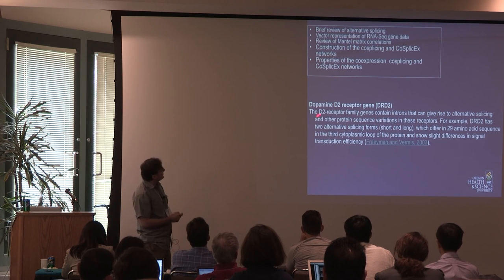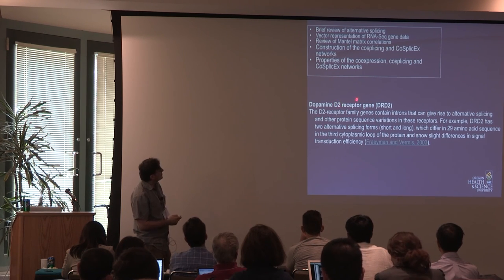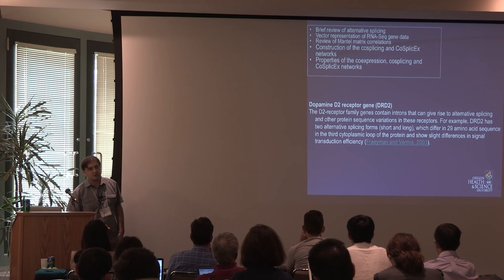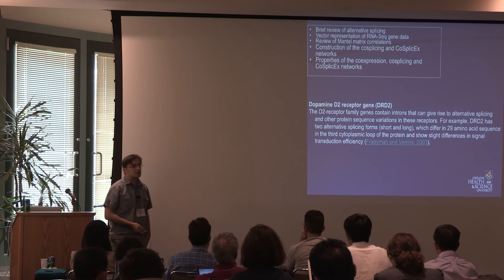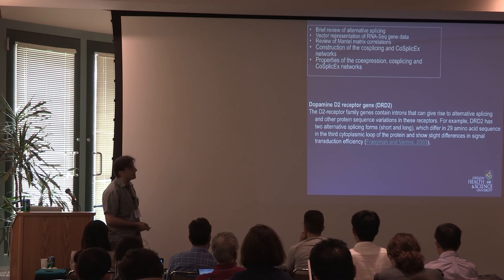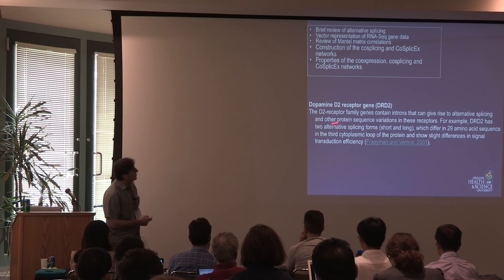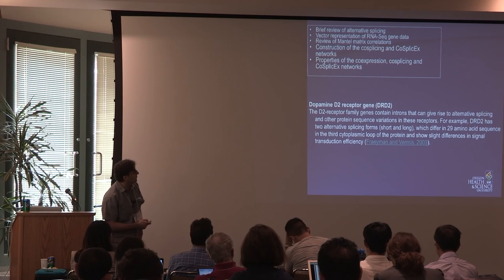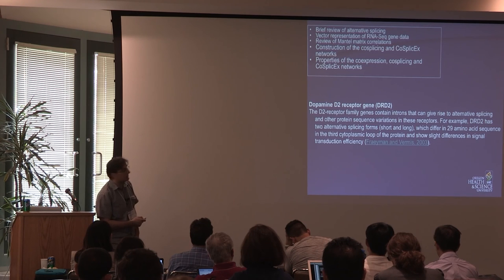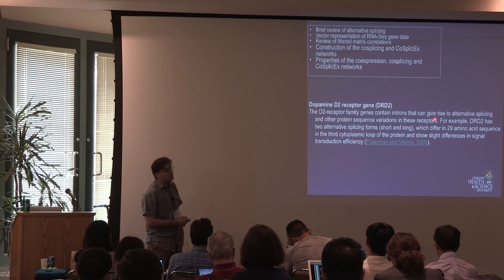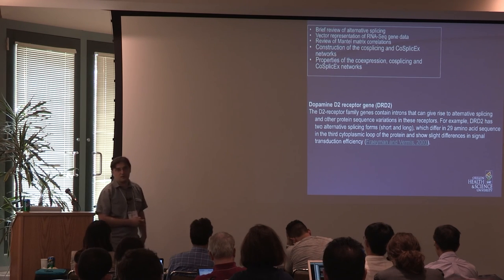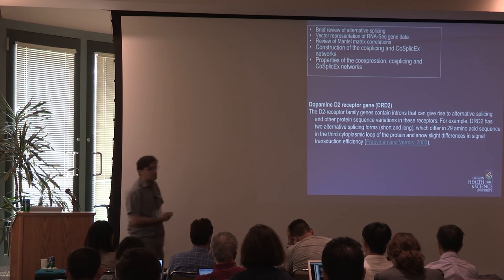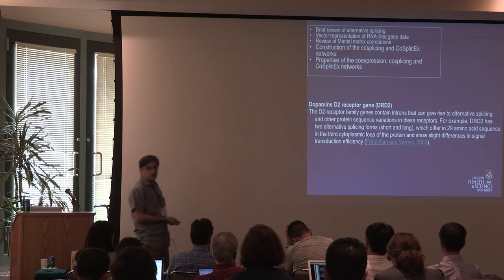As an example, let's look at the D2 receptor gene. If you work in neuroscience, this is a dopamine receptor with an important function in the striatum and even in the cortex. It produces many isoforms, but in particular has a long and a short form. These isoforms have different properties in the protein — the long one behaves differently than the short one. That's an important biological event and we want to describe that.